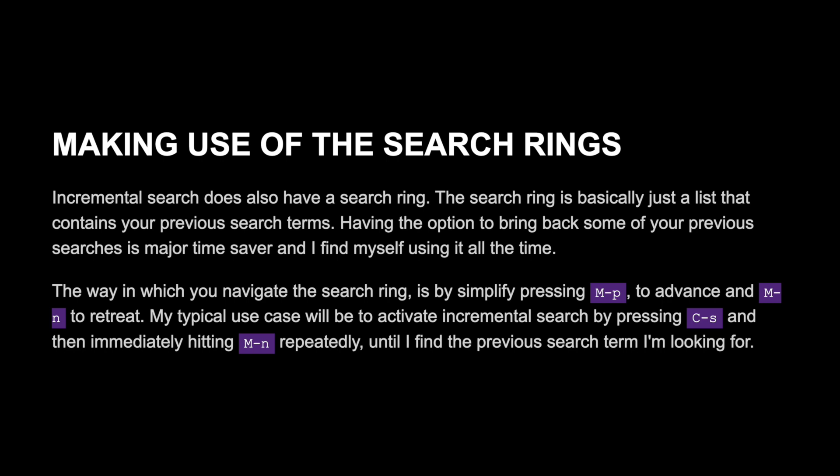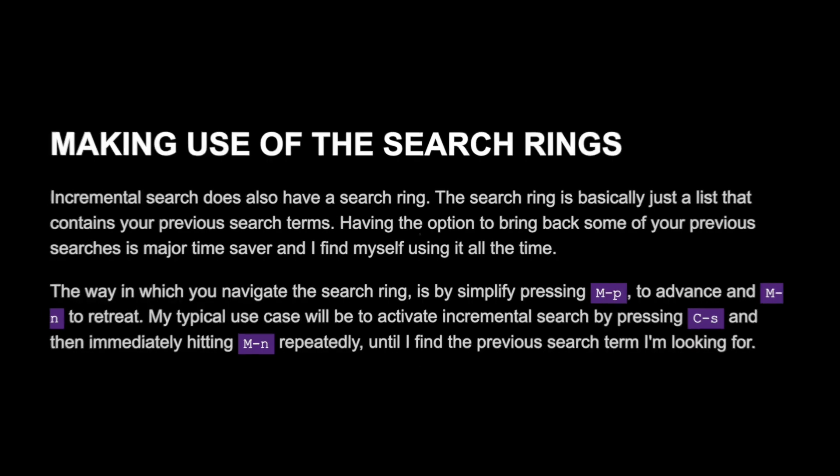The way you navigate the search ring is by pressing Meta-P to advance and Meta-N to retreat. My typical use case is to activate incremental search by pressing Ctrl-S and then immediately hitting Meta-N repeatedly until I find the previous search term I'm looking for.